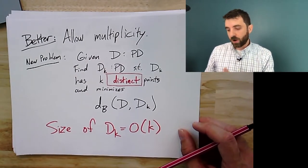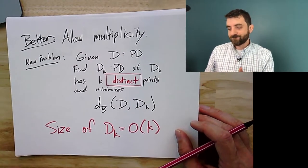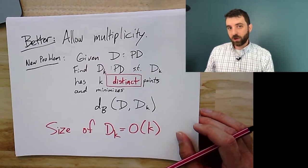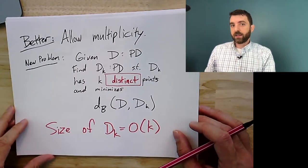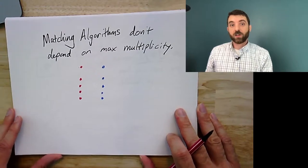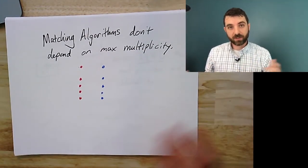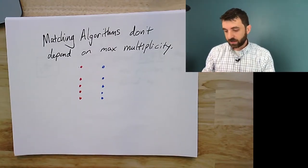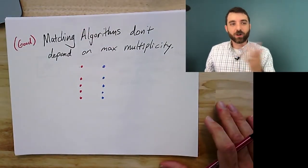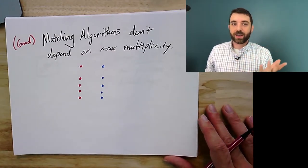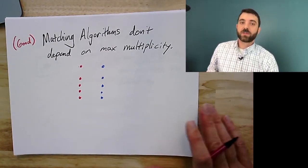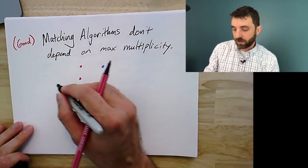Before we proceed, let me argue why having multiplicities shouldn't really blow up the cost of computing bottleneck distance. If you used some standard algorithms you'd pay for the total mass — the sum of multiplicities — rather than just the number of distinct points. But good matching algorithms don't depend on the maximum multiplicity. Most matching literature at some level turns into problems about max flow on bipartite graphs with source S and target T, where edge capacity is one.